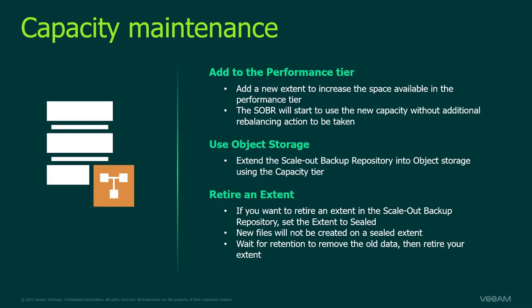Another option to add more capacity is to add object storage. When you add an object storage repository in the capacity tier and start offloading — moving data — you immediately free up space on the performance tier, allowing you to leverage more backups there.